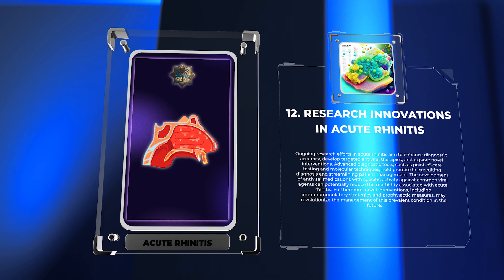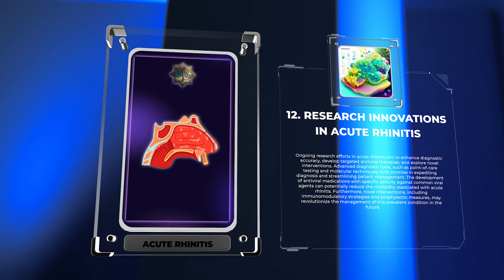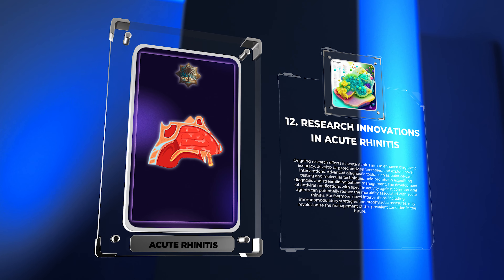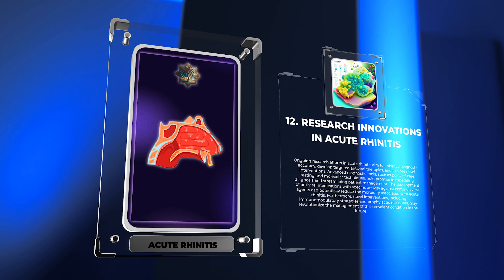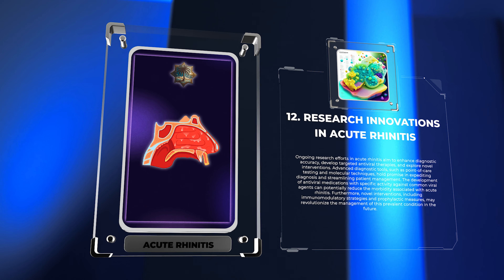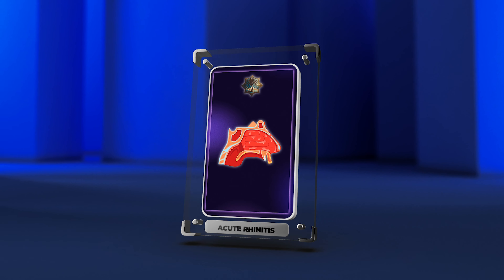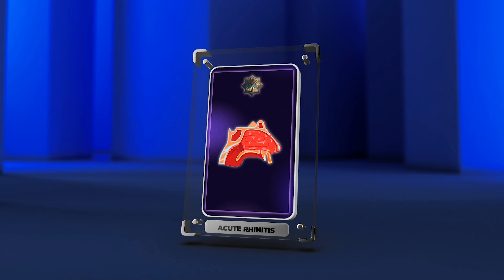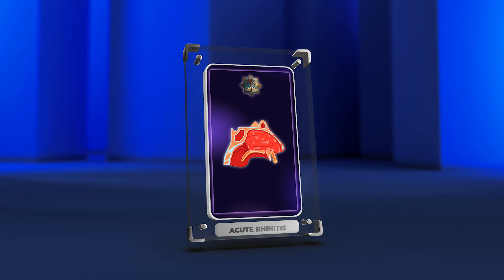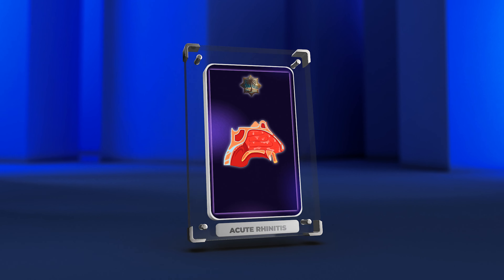Advanced diagnostic tools, such as point-of-care testing and molecular techniques, hold promise in expediting diagnosis and streamlining patient management. The development of antiviral medications with specific activity against common viral agents can potentially reduce the morbidity associated with acute rhinitis. Furthermore, novel interventions, including immunomodulatory strategies and prophylactic measures, may revolutionize the management of this prevalent condition in the future. Acute rhinitis, a common viral infection, affects individuals of all ages. Understanding its causes, symptoms, diagnosis, management, and prevention is crucial for effective patient care and public health. This video provides medical students with a detailed overview to equip them with the necessary knowledge and skills.